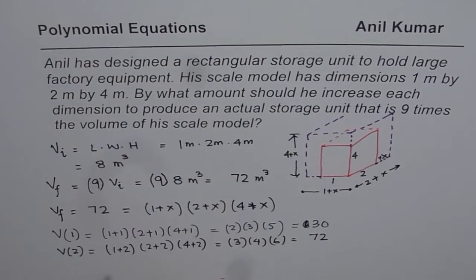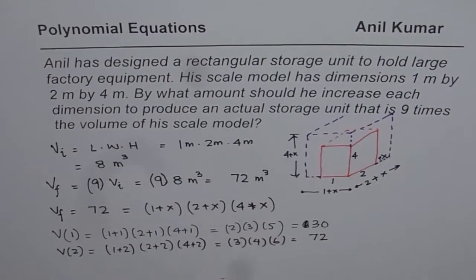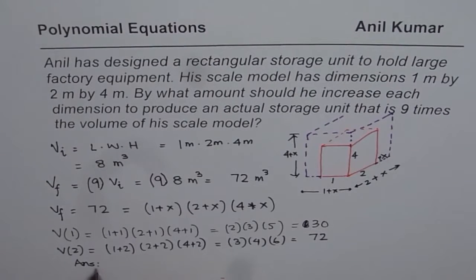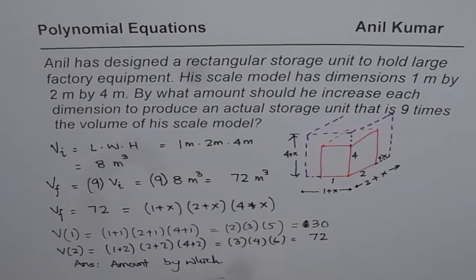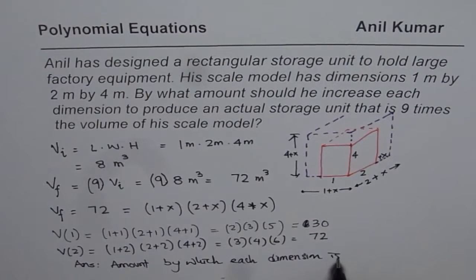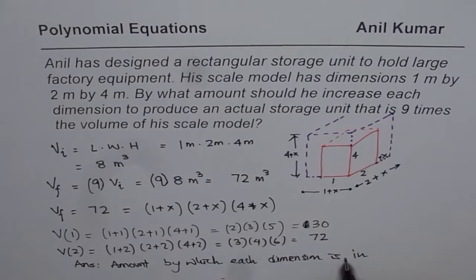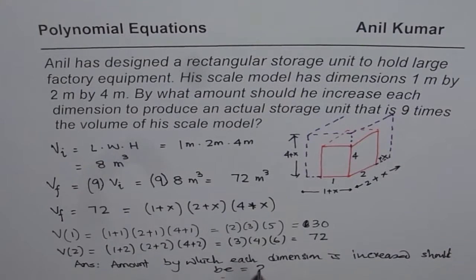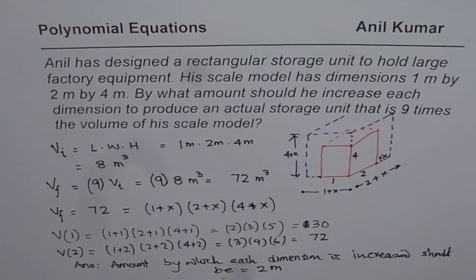So therefore, you can say that the amount by which it should be increased is 2 and the units are meters. So we get the answer that is amount by which each dimension is increased should be equal to 2 meters. So that is how you can get your answer.